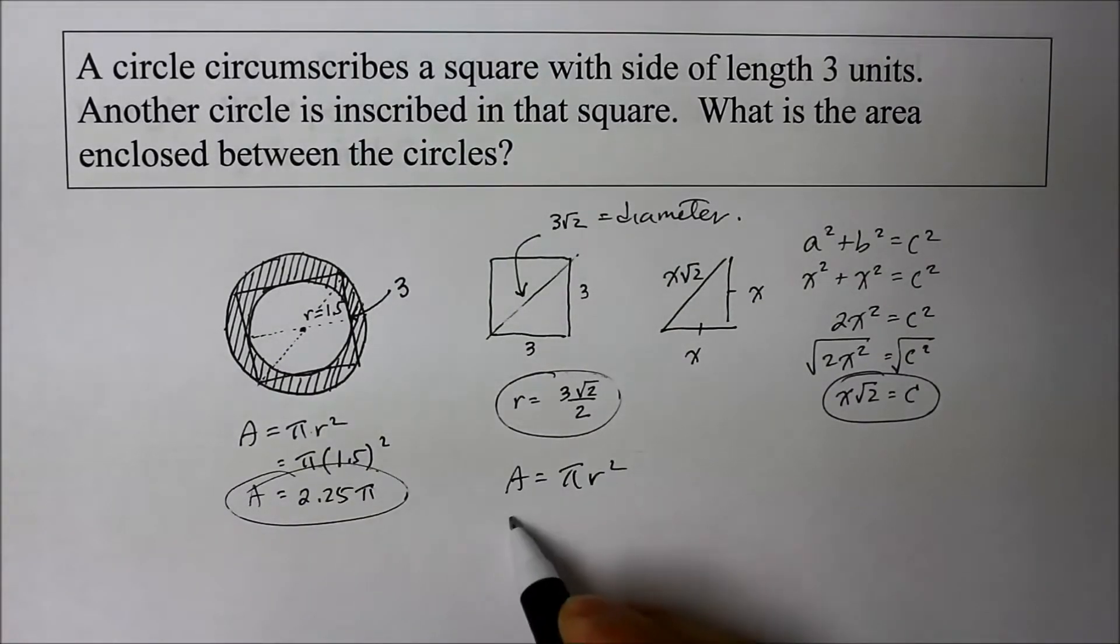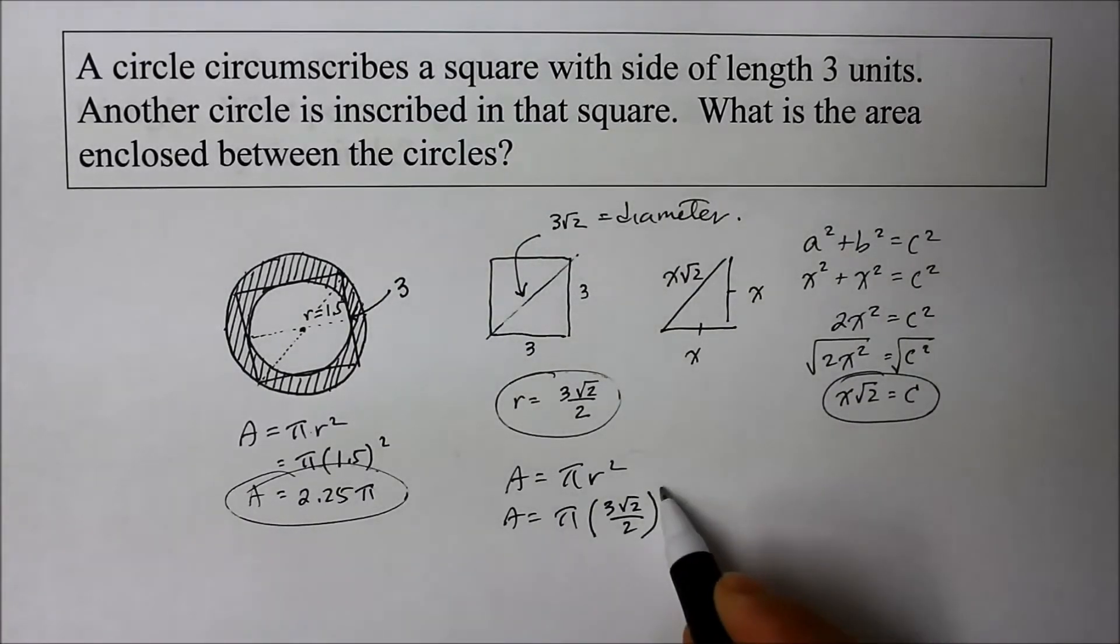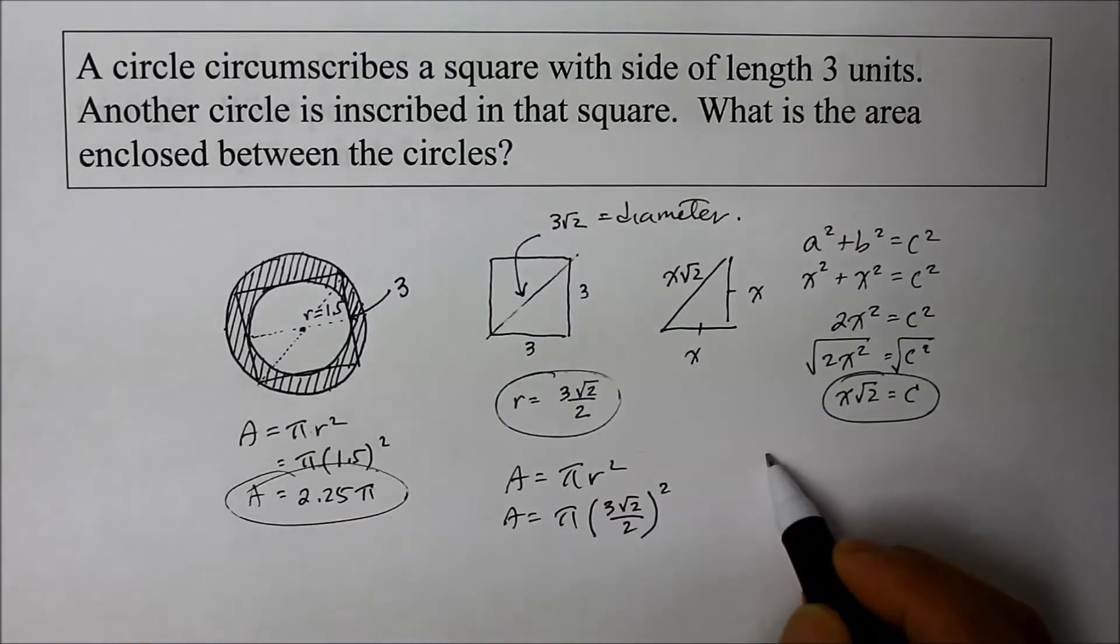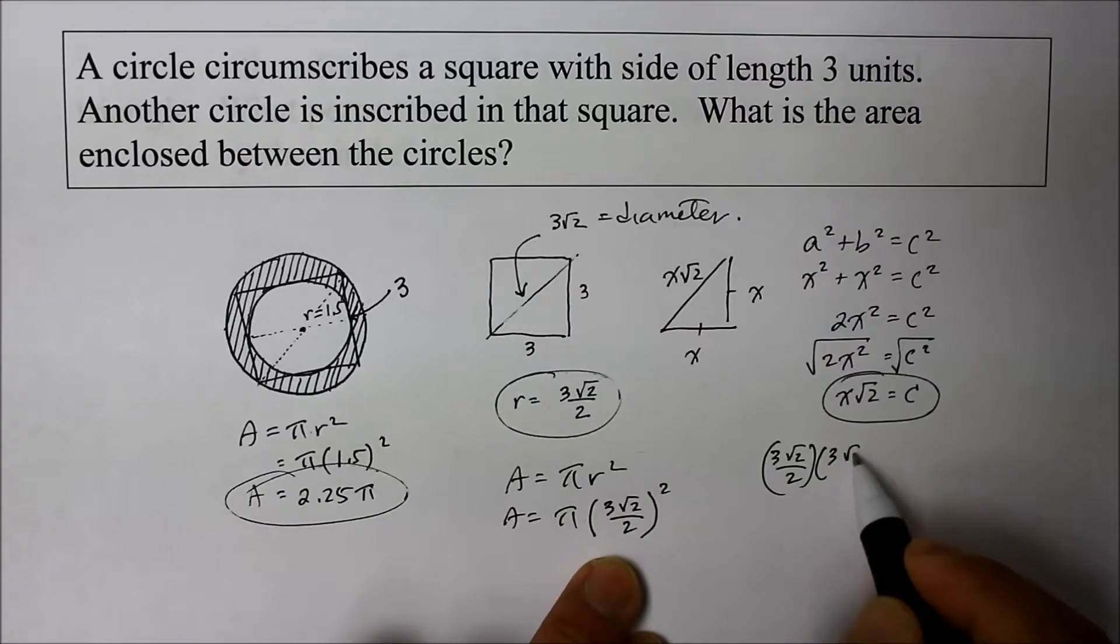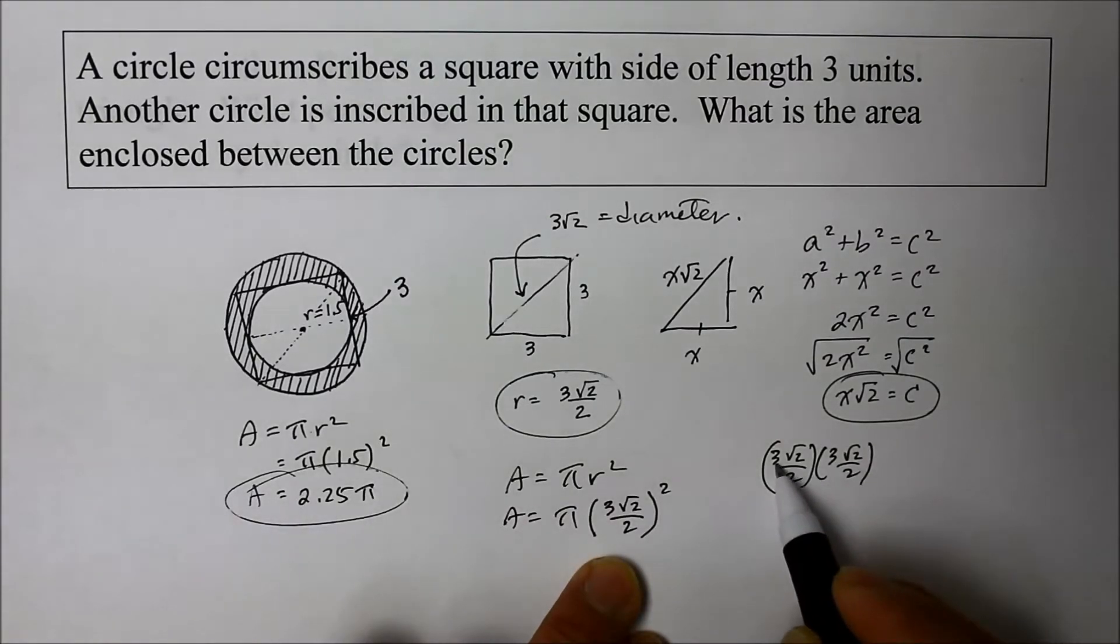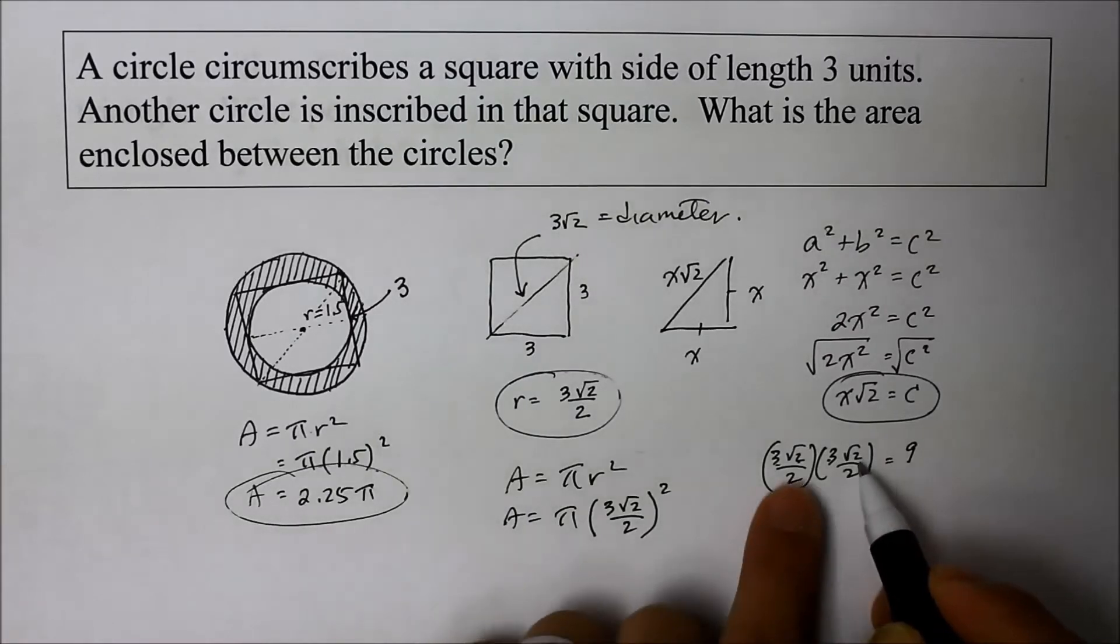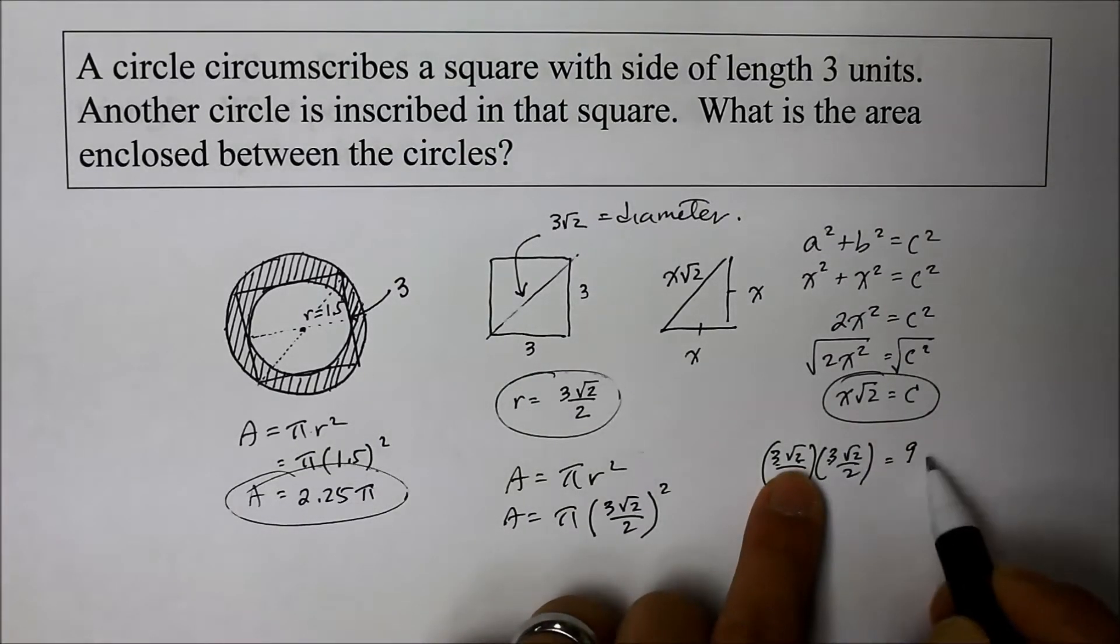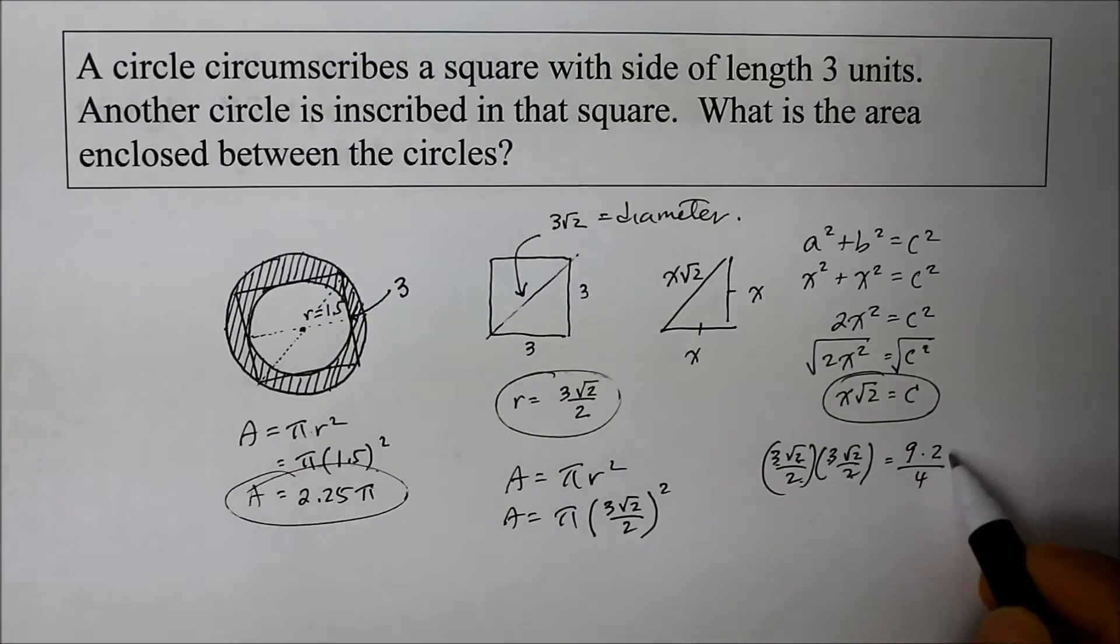Pi r squared. That's pi times radius. It kind of looks not too pretty, but it can be done. 3 square root of 2 over 2 times another 3 square root of 2 over 2. Multiply across. 3 times 3 coefficient is 9. When you multiply two identical radicals, the 2 comes out. The radical sign comes out. 2 times 2 is 4.